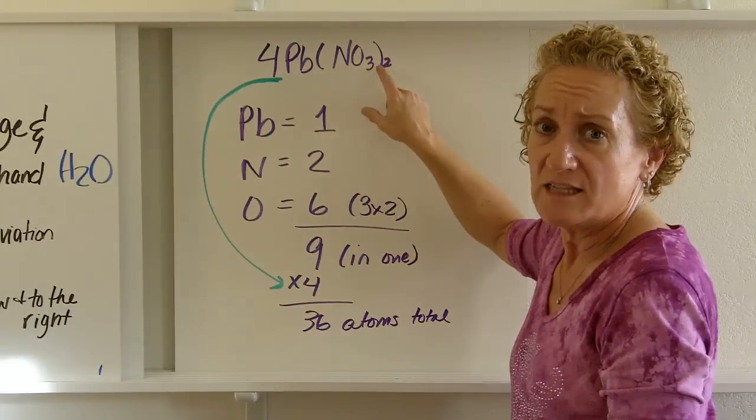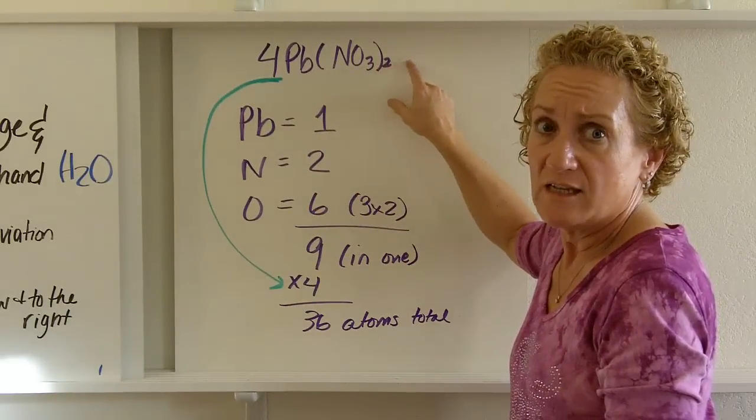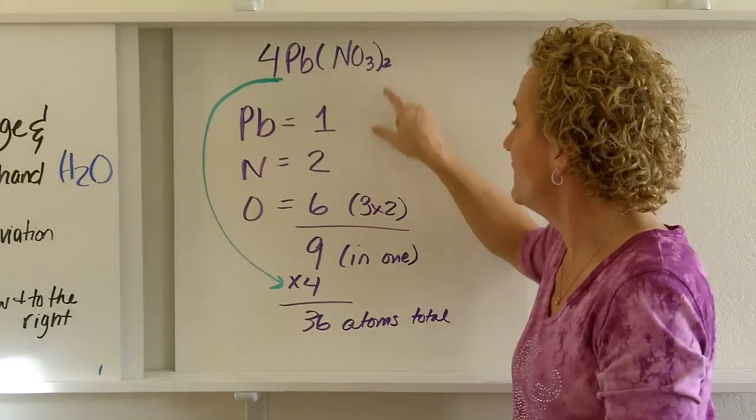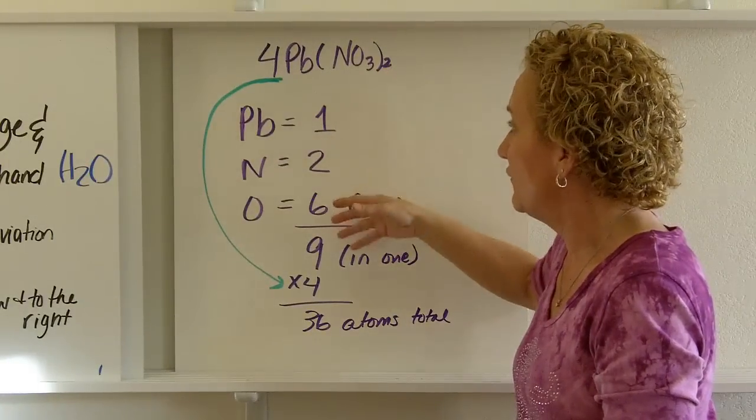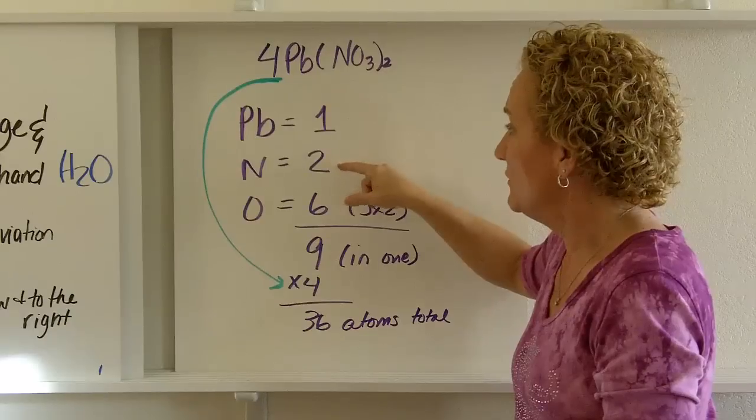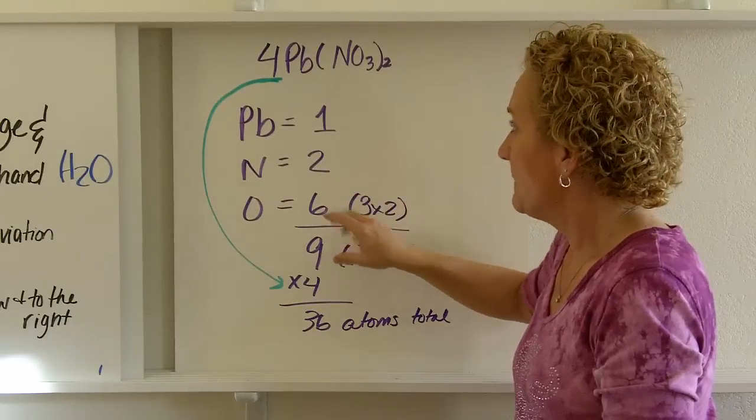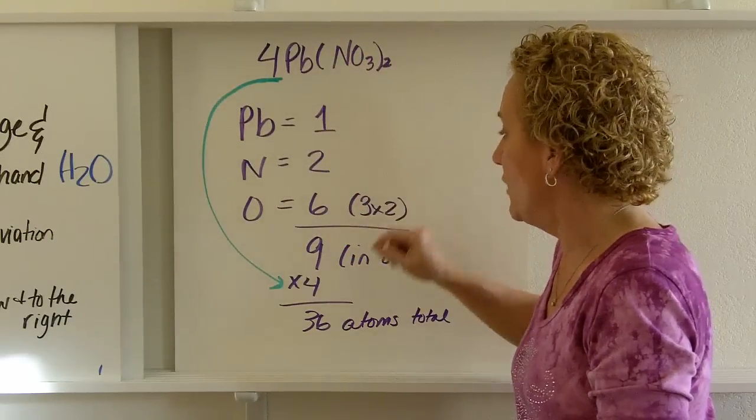How much oxygen? 6. 3 times 2. 3 times 2 is 6. 6 oxygens. So if I add that all up, 1 and 2 is 3, and 6 is 9. I have 9 atoms in one molecule.